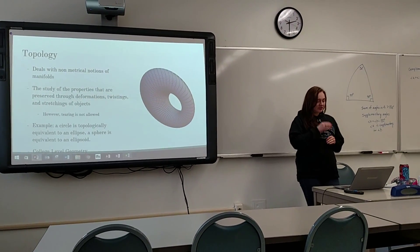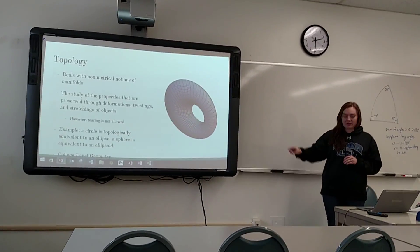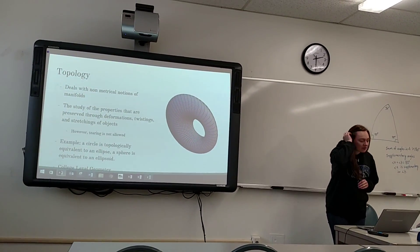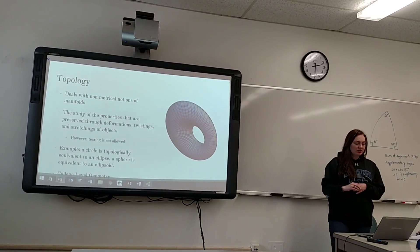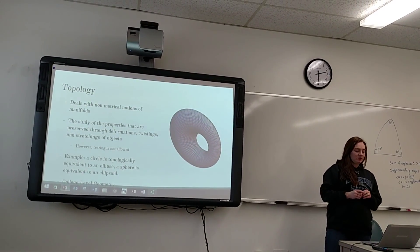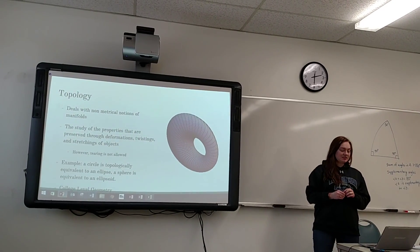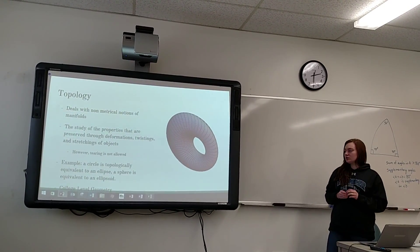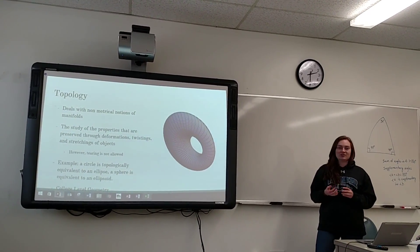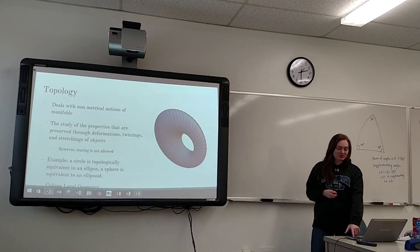An example is the circle to the right. A circle is topologically equivalent to an ellipse, and a sphere is equivalent to an ellipsoid. This is also college-level geometry.